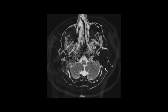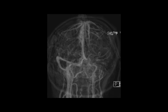Causes of dural venous sinus thrombosis include acute dehydration, administration of chemotherapeutic agents, hypercoagulable states, iatrogenic causes, infection, malignancy as in our case, malnutrition, pregnancy, and trauma.